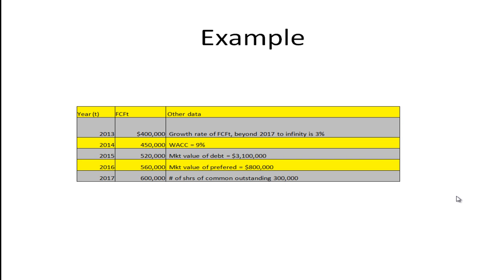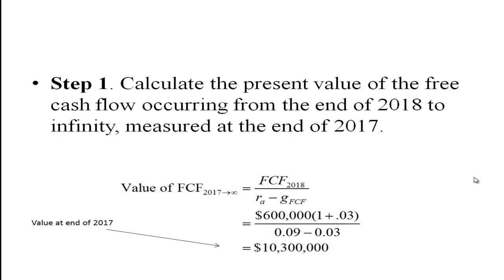Let's take a look at an example. Suppose we have some data here from 2013 through 2017, and we have free cash flows for these five years. We're going to assume that beyond 2017, free cash flow is going to grow at a constant rate of 3%. We're also going to assume that the weighted average cost of capital is 9%. The market value of debt is $3,100,000, the market value of preferred is $800,000, and the number of shares outstanding is 300,000.